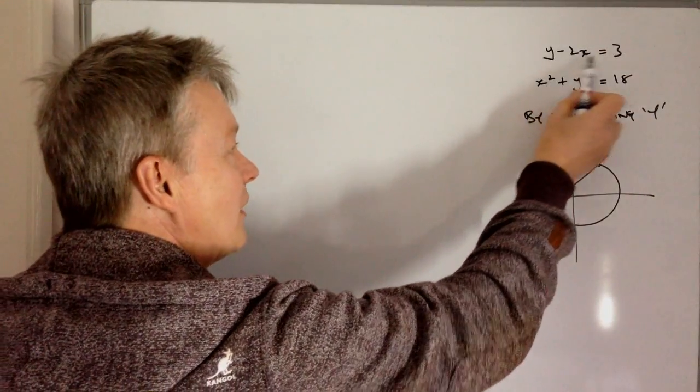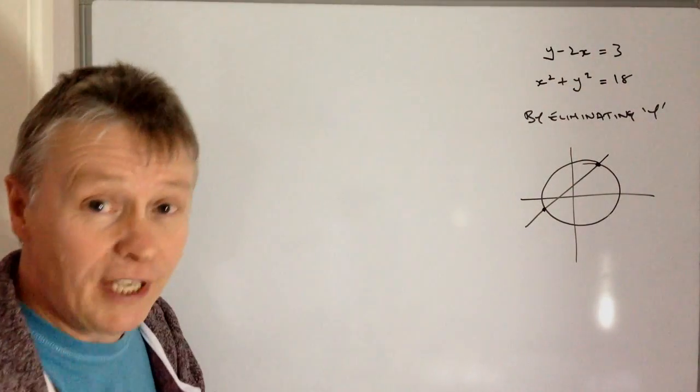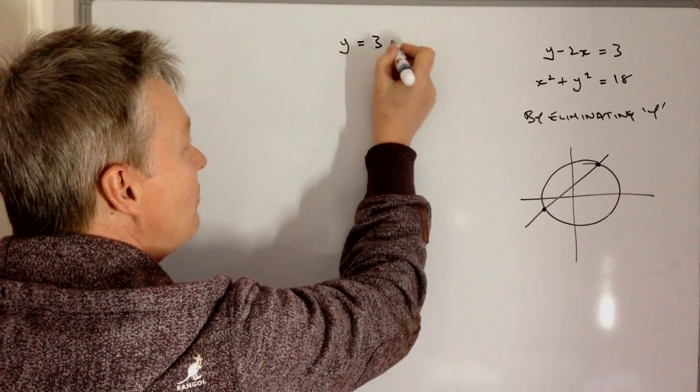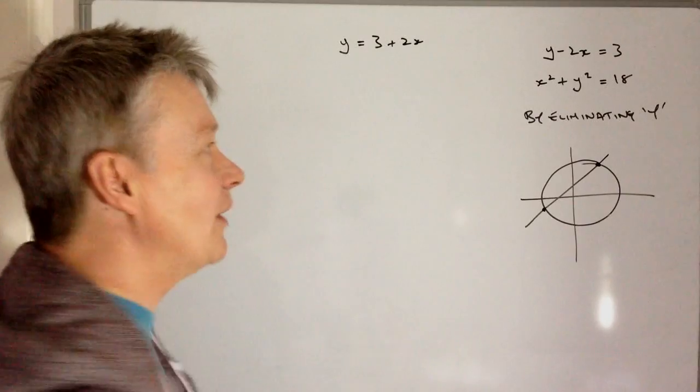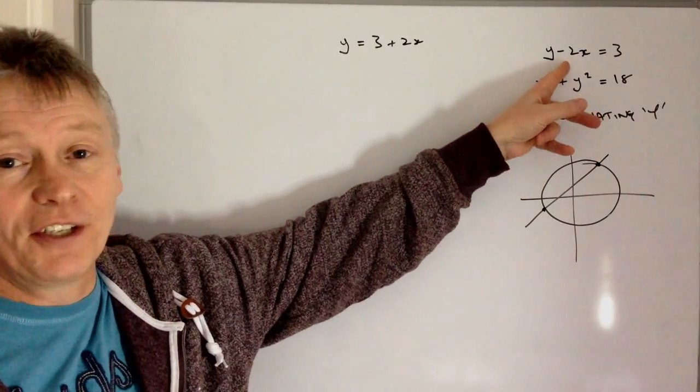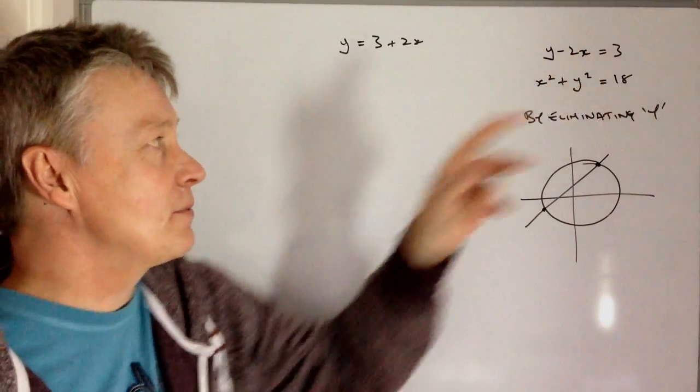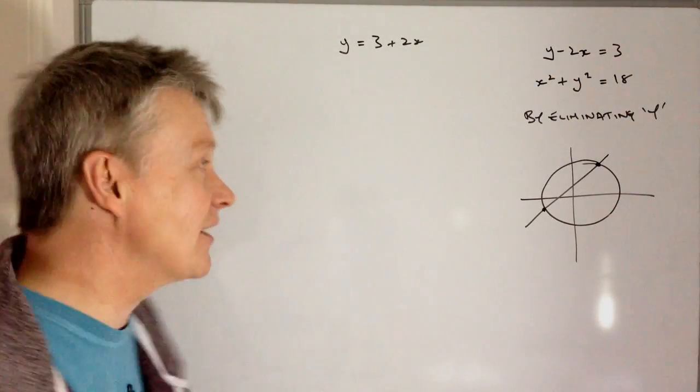Okay, so y minus 2x equals 3. Well, I can rewrite that as y equals 3 plus 2x, because all I've done is added 2x to both sides. This bit then becomes 0 and this becomes 3 plus 2x.